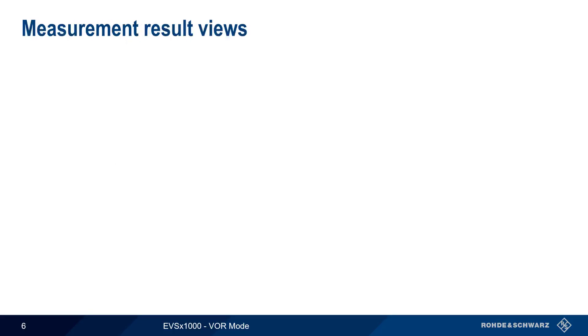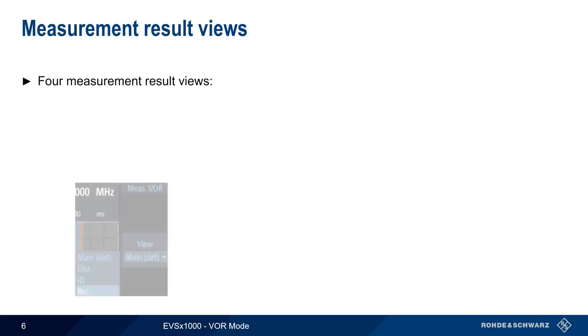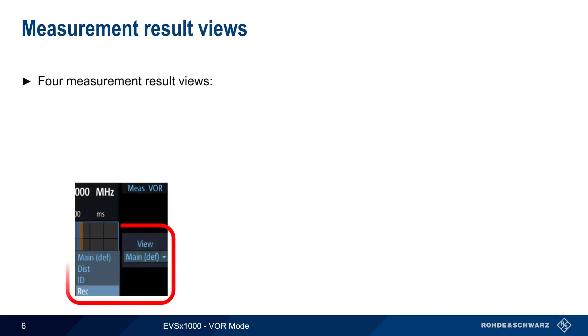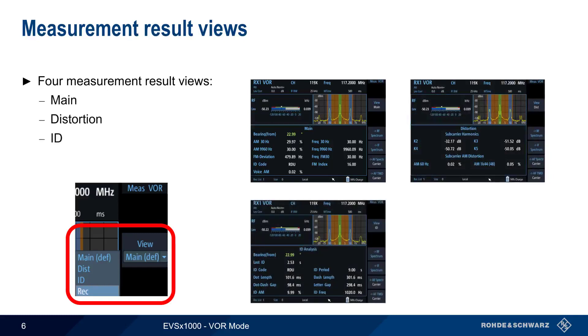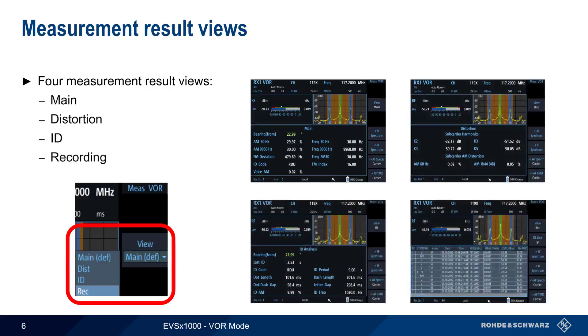VOR measurements are divided into four different views on the EVS. These are Main, Distortion, ID, and Recording. We'll start by looking at the Main Analysis View.